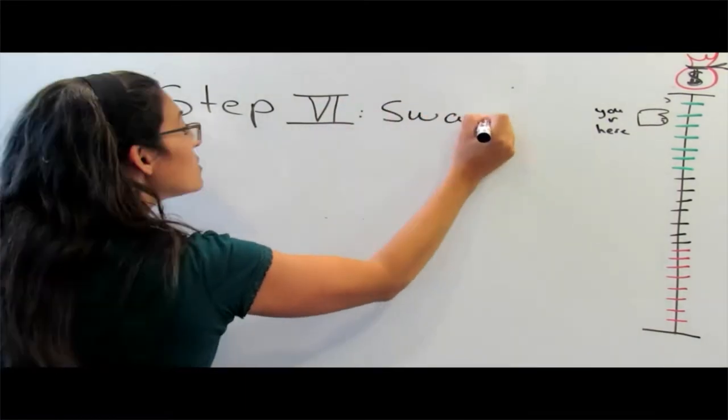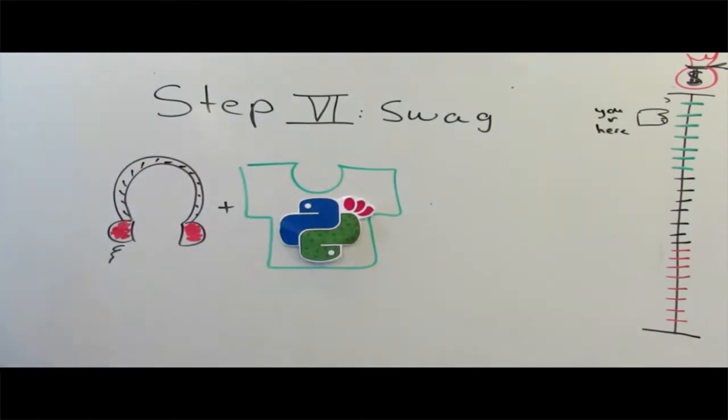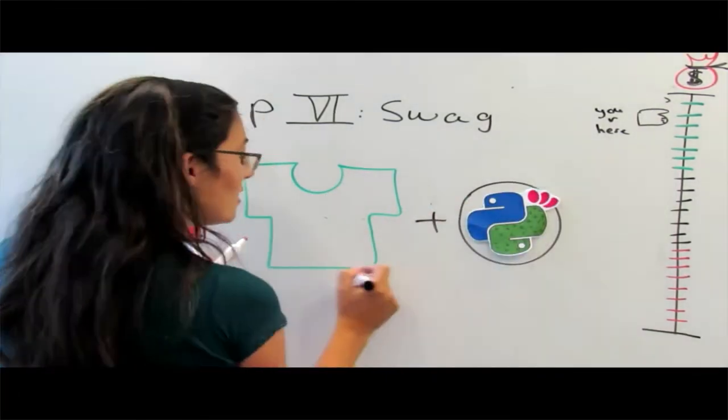Step 6. Swag. How do you make an engineer happy? You find the shirt and the sticker.